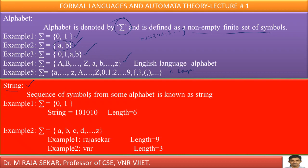What is a string? A string means a sequence of symbols from some alphabet. For example, if sigma = {0, 1}, this is an alphabet. The sequence 1 0 1 0 1 0 is a string from this alphabet. The length of this string is 6, since there are 6 symbols. You can also form other strings like 0 0 (length 2), 1 1 (length 2), or 1 0 1 (length 3). However, 1 a b cannot be a string from this alphabet because a and b are not available in the alphabet {0, 1}.